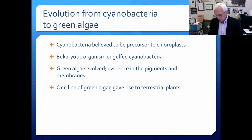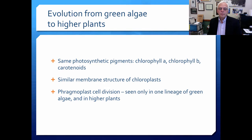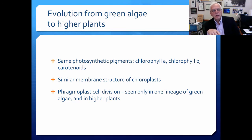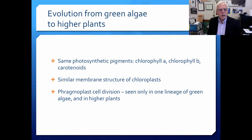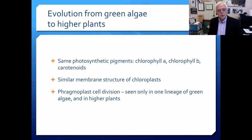One line of green algae is thought to have given rise to the terrestrial plants. Where do these so-called higher plants come from? The thought is that they came from these green algae because they include the same photosynthetic pigments — chlorophyll A, chlorophyll B, and carotenoids. They also have the same membrane structure of the chloroplasts. Both green algae and higher plants include phragmoplast cell division, which is only really seen in one lineage of green algae and in higher plants. So it wasn't just coincidental — one evolved from the other.